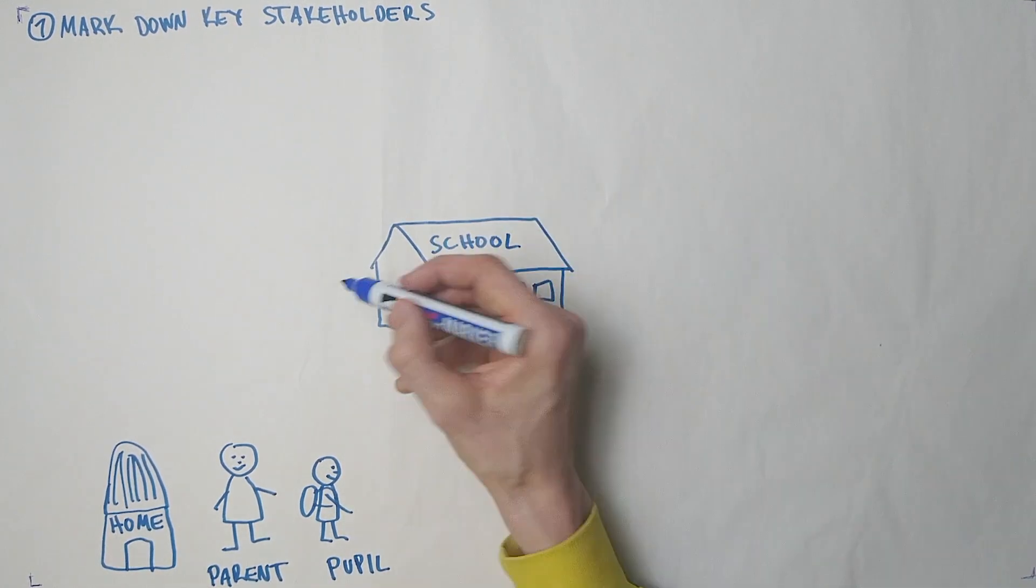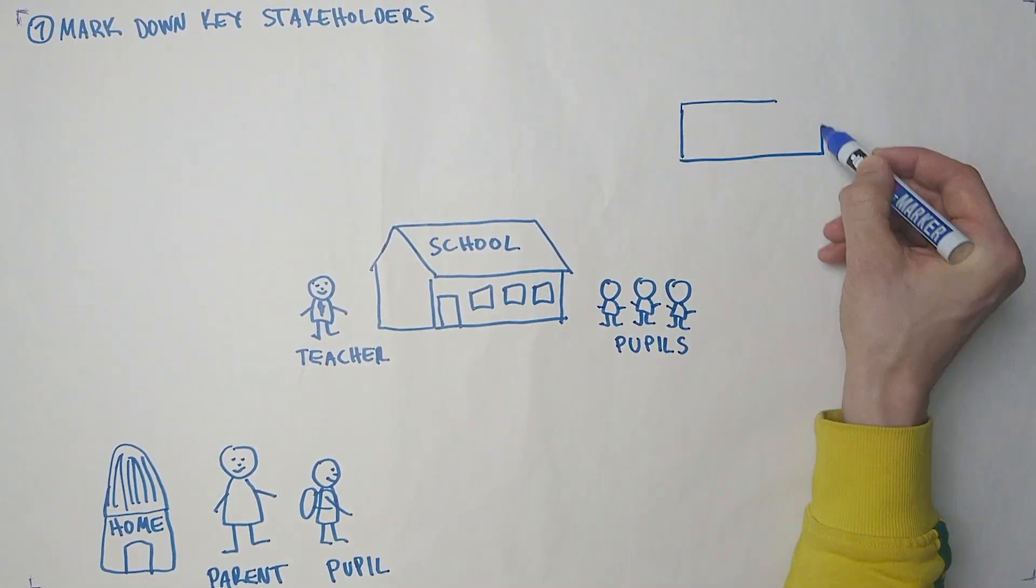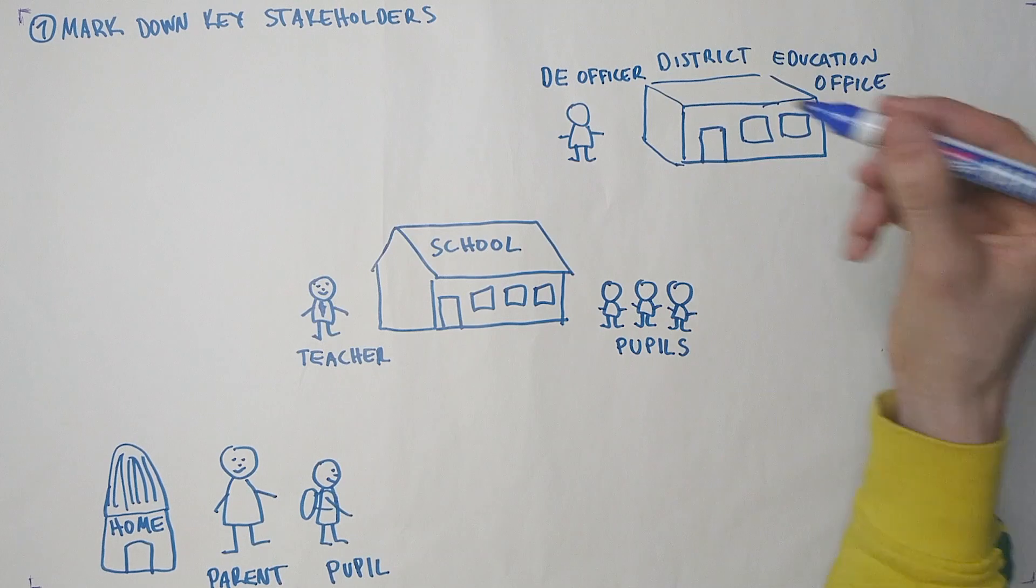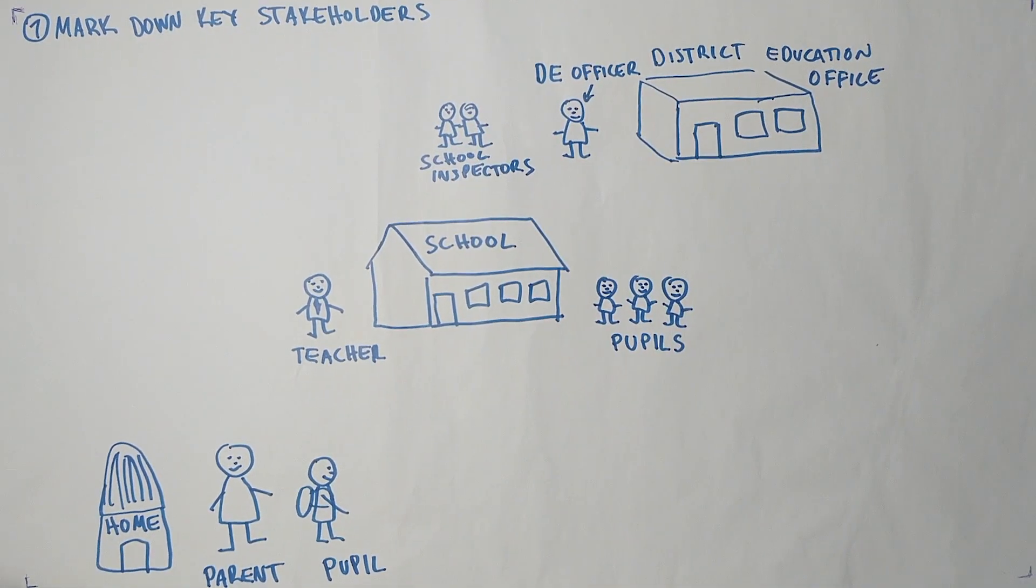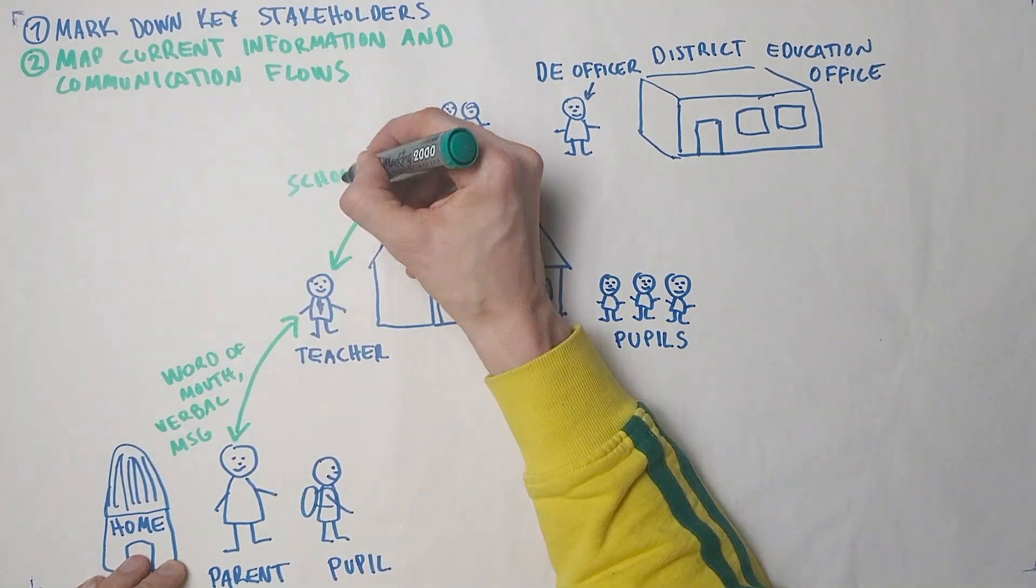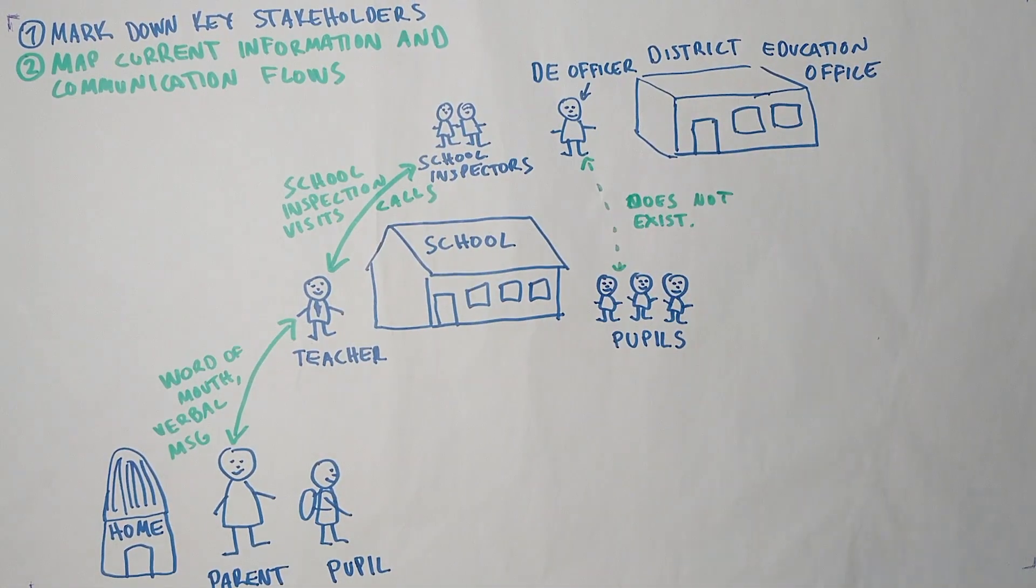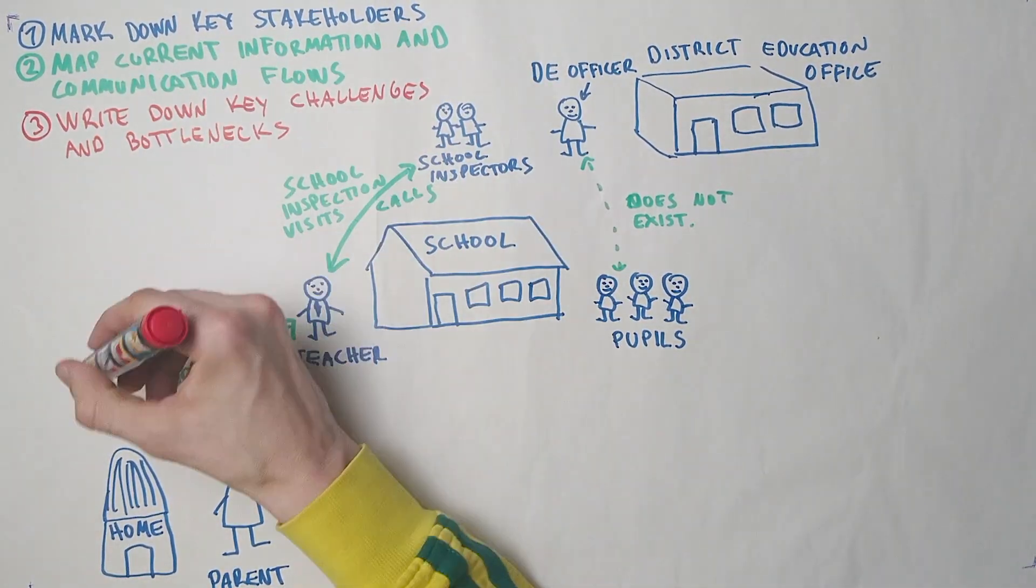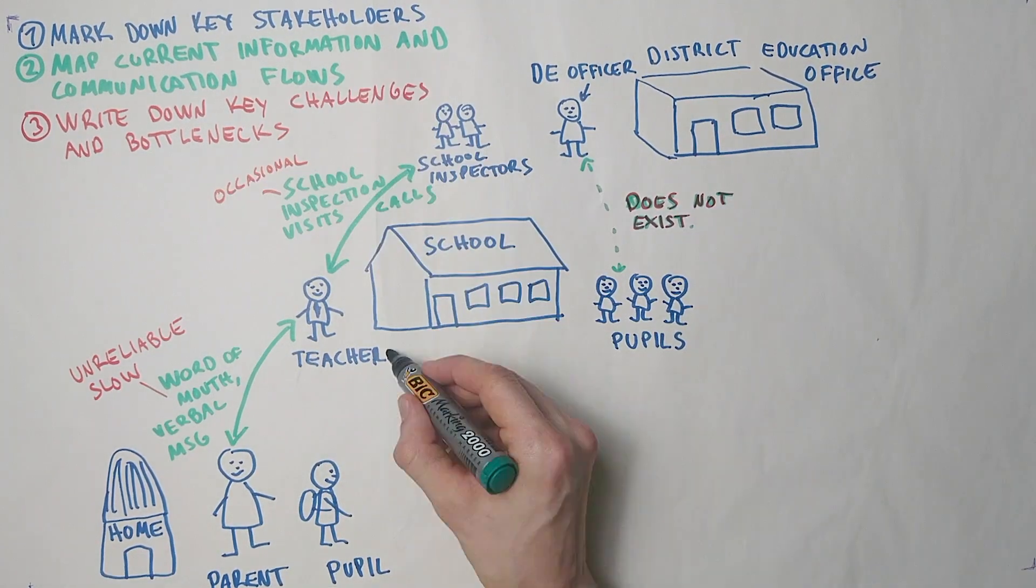Then visualize the current information and communication needs of each stakeholder with arrows and symbols. You can also make notes of power relations, gender equalities, existing infrastructure and other points that are relevant to understanding the situation.